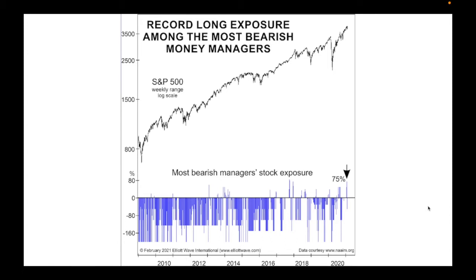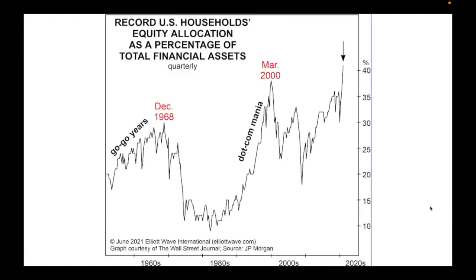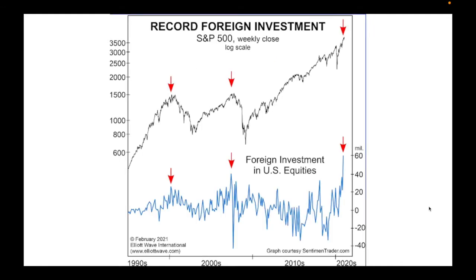We've got record long exposure amongst even the most bearish money managers — the most conservative, most concerned that the market's going down — and they have record exposure to the S&P 500. Again, this is a logarithmic scale. We've got record US household equity allocation — US households owning shares as a percentage of their total financial assets. We were nudging 37-38% in March 2000 before that epic crash, and we're well above that now. Foreign investment also tends to coincide with the peaks of markets, and here we are again on a logarithmic scale, with the same applying to foreign investment in US equities.